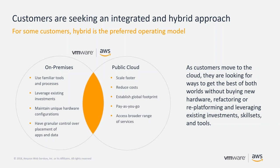For some customers, hybrid is the preferred operating model. On-premises, they use familiar tools and processes, want to leverage existing investments, maintain unique hardware configurations, and have granular control over application or data placement. With public cloud, they want to scale faster, reduce costs, establish a global footprint, use a pay-as-you-go model, and access a broader range of services. Customers also want to avoid purchasing new hardware, refactoring, replatforming, and want to leverage existing skill sets and tools.